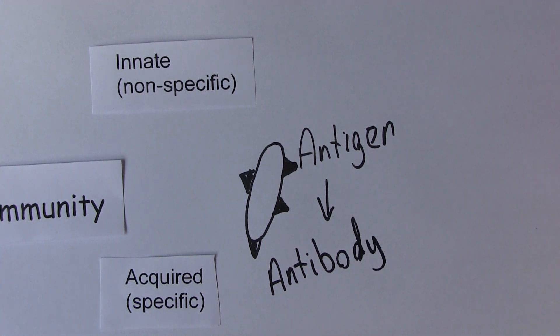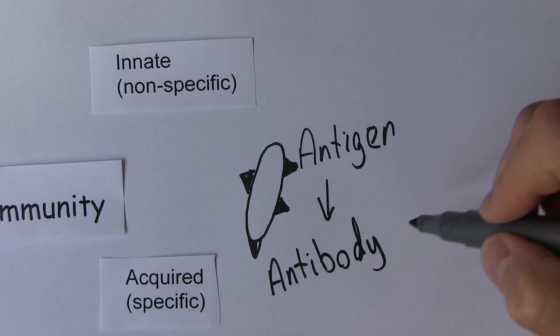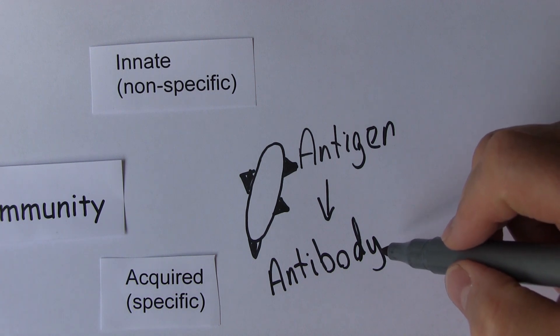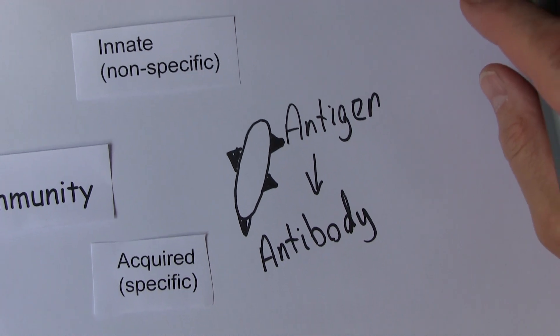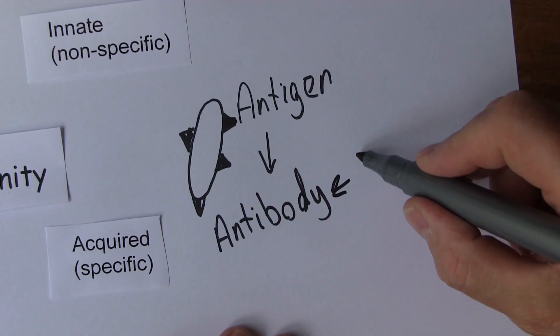And the antibodies are the immune proteins, the immunoglobulins. And these antibodies are actually produced by the body's white blood cells. Particularly, they are produced by the lymphocytes.